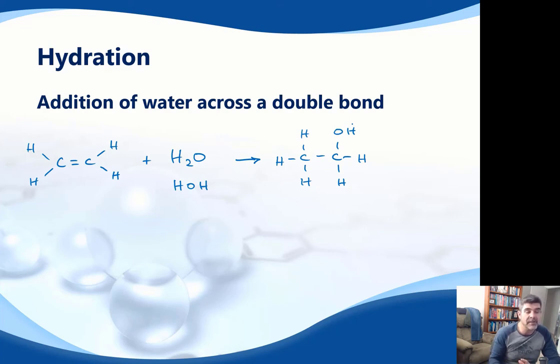Often for this kind of thing, we might use a catalyst such as a dilute sulphuric acid, and that sometimes is shown by putting that across the top of the arrow. I'll just put dilute here so we're aware. And that water is going to be added across the double bond.